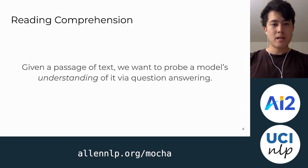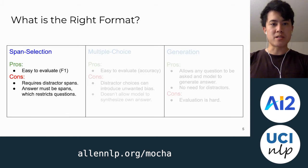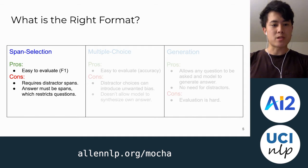I'll start by motivating our work and talking about reading comprehension. Reading comprehension is a task where we give a model a passage and we want to probe a model's understanding of it. The way we usually probe understanding is via question answering, and this raises the question: what is the right format of question answering we should be using? The first format is span selection — the pros are that it's easy to evaluate, but the cons are that we require distractor spans and answers must be spans, which is a bit restrictive.